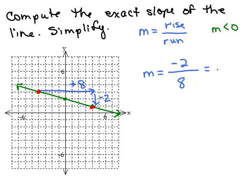Now we simplify it. Remember, the slope is just a number. It's negative 1/4. So the slope of this line is negative 1/4.